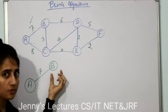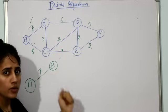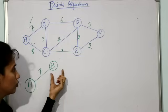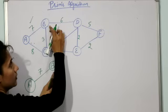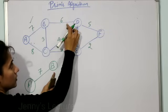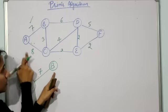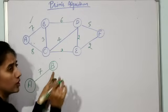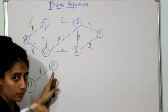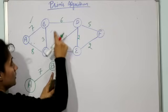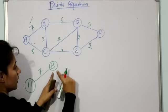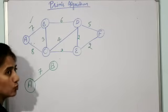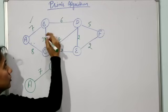Now we have reached vertex B. You have to consider all incident edges from B as well as from A. From B we have edges with weight three and six, and from A we still have one edge with weight eight. Out of eight, three, and six, the minimum weight is three, so we choose that one.